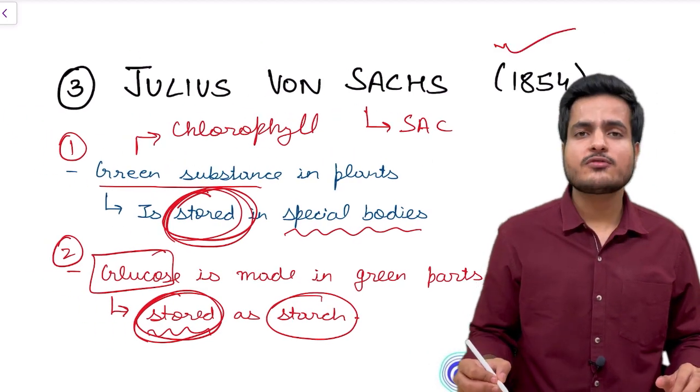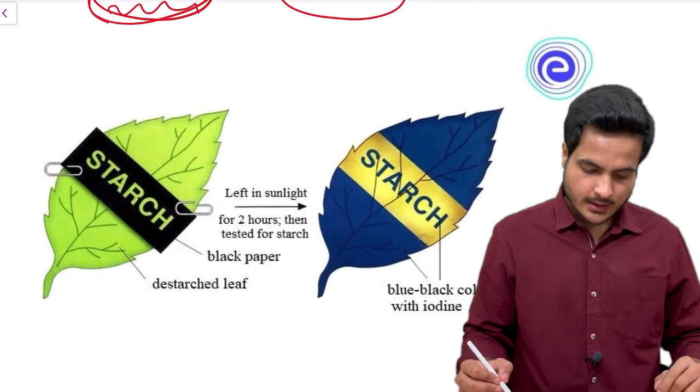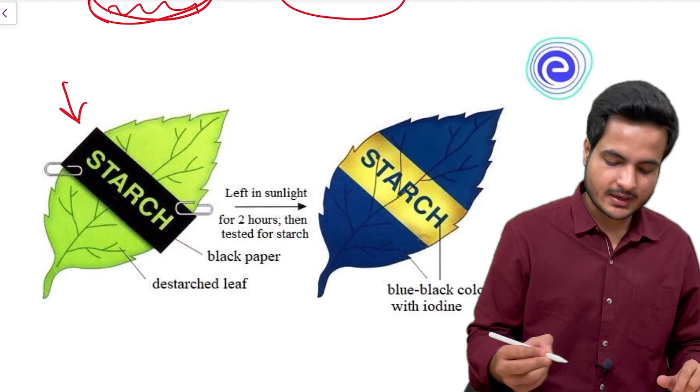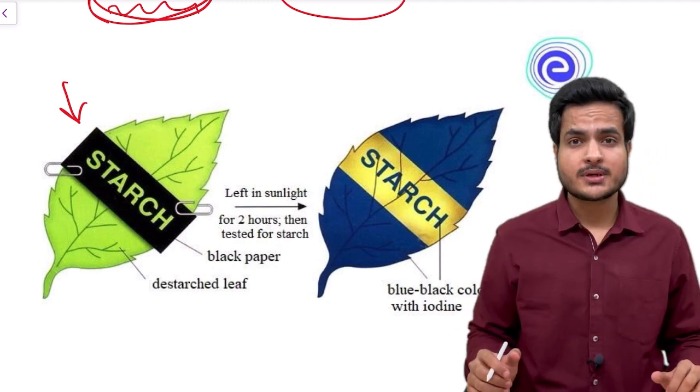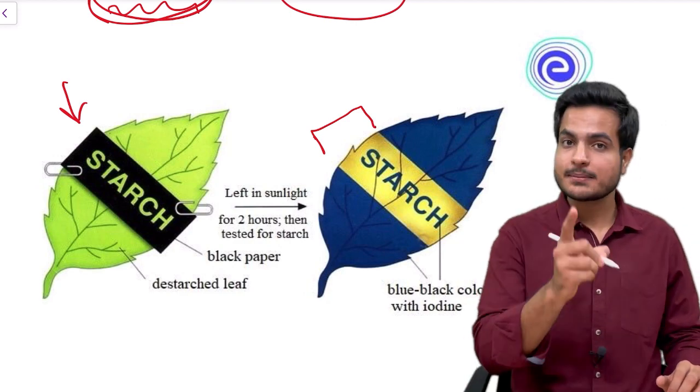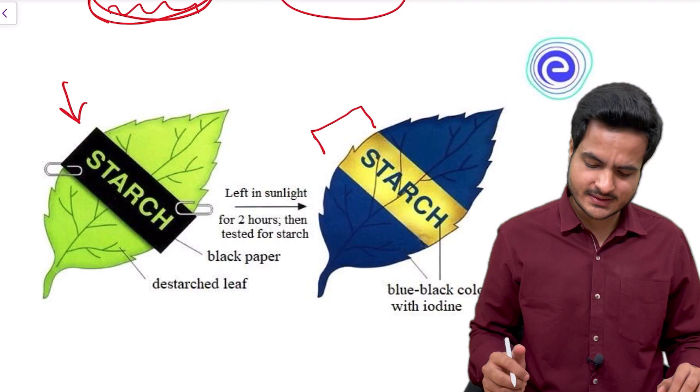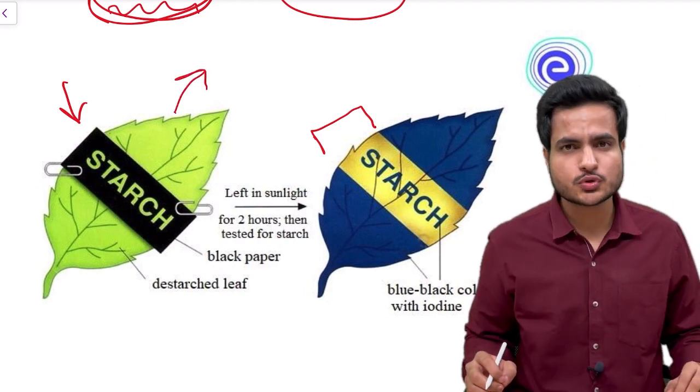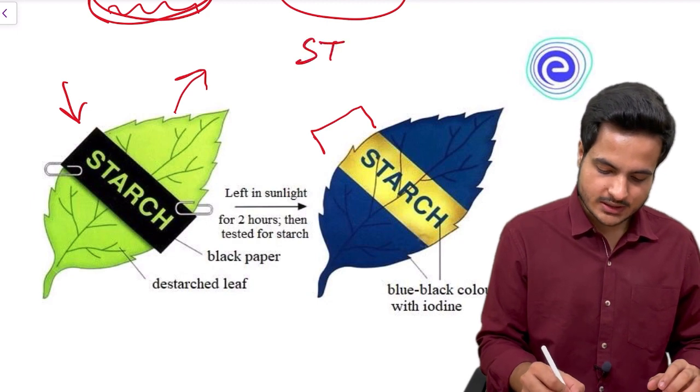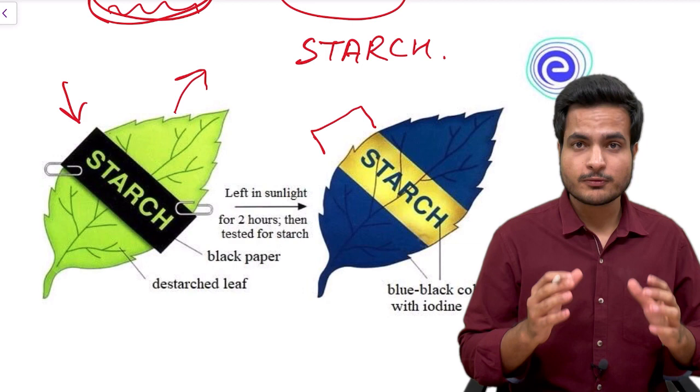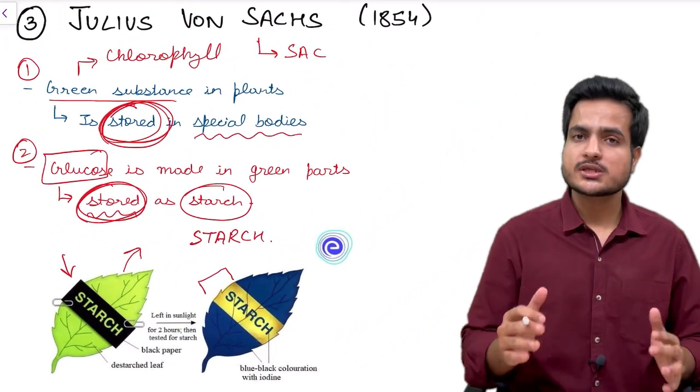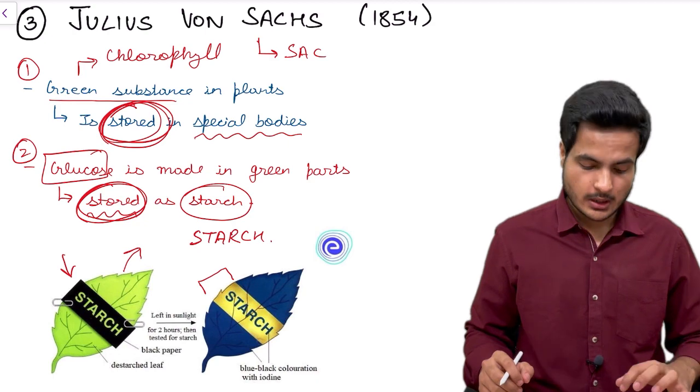He gave these statements in 1854. Now let me show you his experiment. He used a simple experiment which we all have done in our classes. We will place a piece of paper over a leaf and place that plant in sunlight. After some time when we do an iodine test over that leaf we could find that the leaf will turn blue black except at the region which we covered with paper. That signifies that this green part of the leaf which was exposed to sunlight was doing photosynthesis, was preparing glucose and this glucose was converted into starch. This starch when combined with iodine will give blue black color.